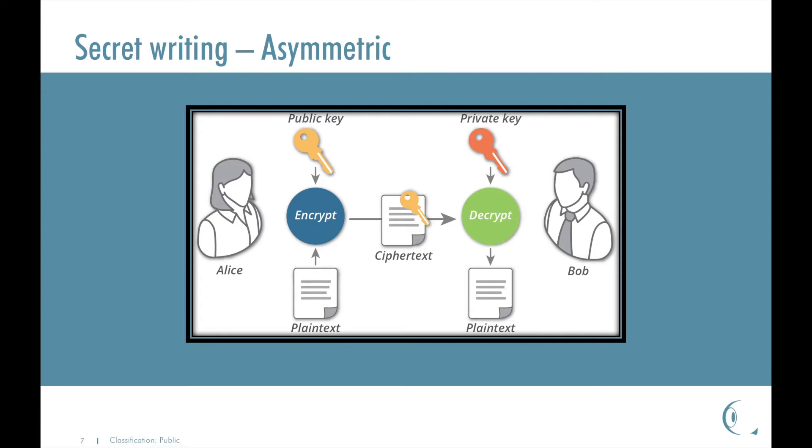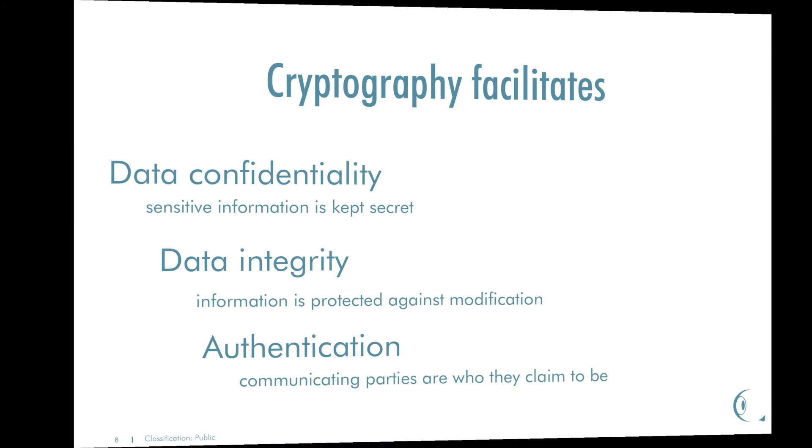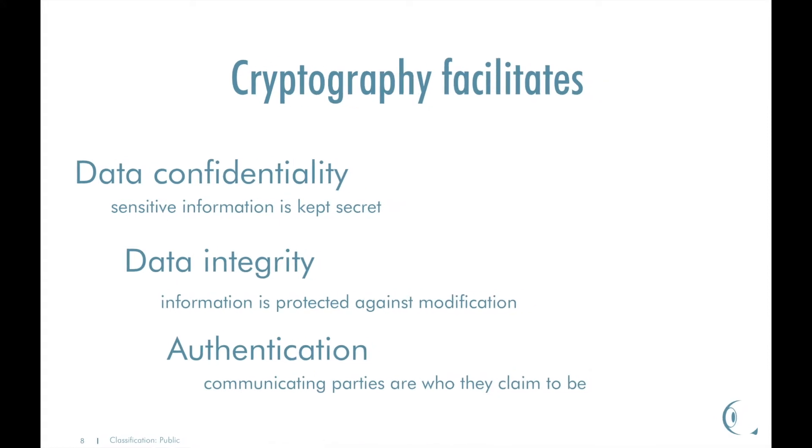Once secure key distribution is achieved, Alice and Bob can use a symmetric algorithm, such as the AES, and symmetric key to make the communication confidential. In practice, cryptography combining security protocols are the very essence of modern secure communication. Cryptography facilitates data confidentiality, data integrity, authentication. With other words, sensitive information is kept secret, information is protected against modification, communicating parties are who they claim to be.